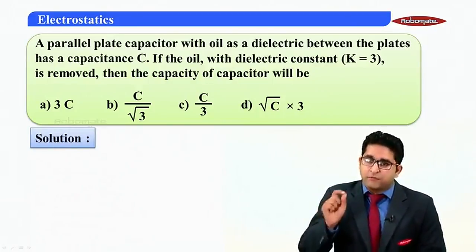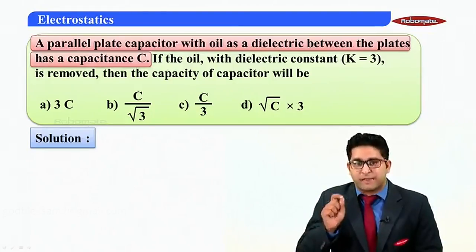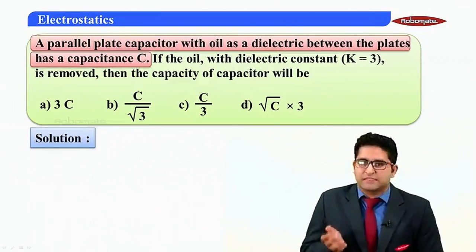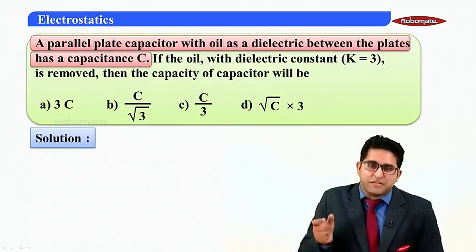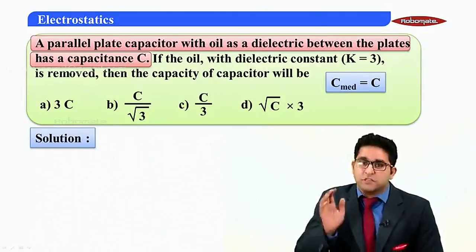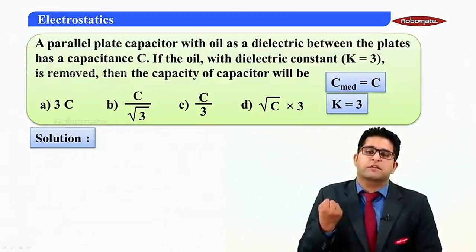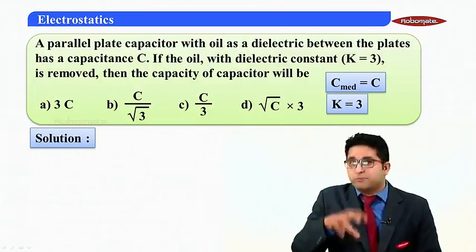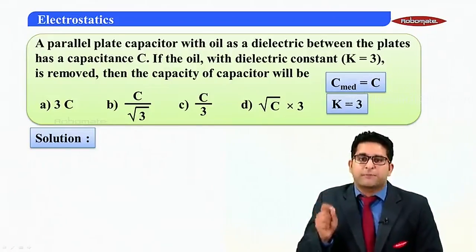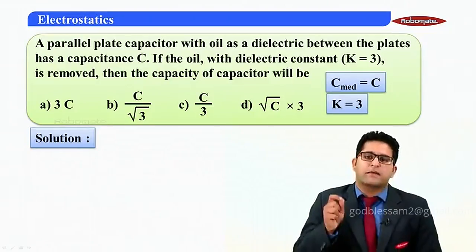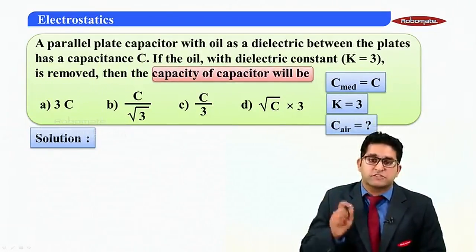We are provided with a parallel plate capacitor with oil as dielectric between the plates, having capacity C. Since oil is present, a medium is present, so C_medium equals capital C. The oil has dielectric constant K equal to 3. When the oil is removed, medium is removed and air will be left between the two plates. We need to find the capacitance with air present.